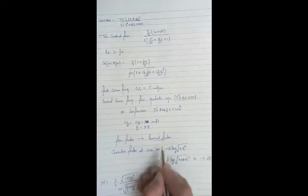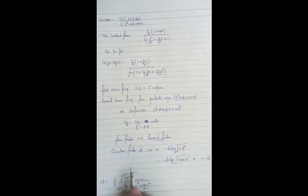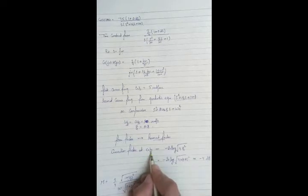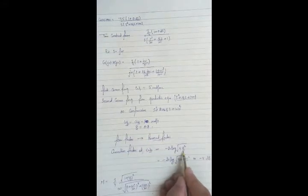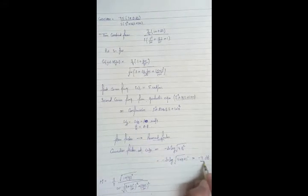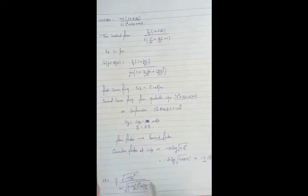Here comes the case of the correction factor, which is related to the resonant frequency. The correction factor at ωn = 10 is given by the formula: −20 log(√(4ζ²)), and my correction factor is approximately −4 dB. This type of correction applies in cases of complex poles or complex zeros.